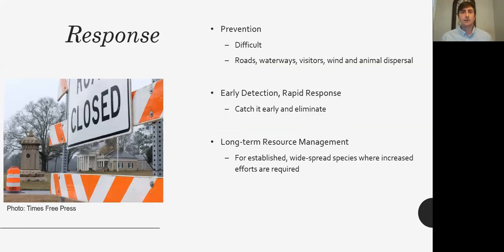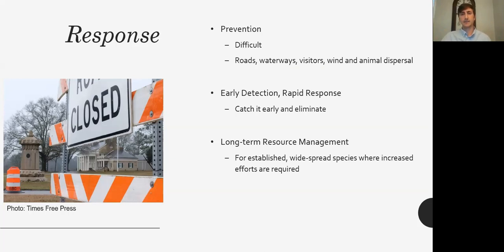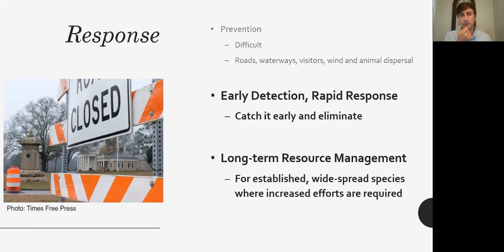Prevention is ideal, but unfortunately very difficult if not impossible. All parks and properties are intersected by roads and waterways like creeks and rivers. Parks have lots of visitors on horseback or on foot. An invasive species doesn't know not to cross the park boundary — if there's suitable habitat across the property line, it's going to grow there just as easily, making it almost impossible to prevent invasive species from popping up.